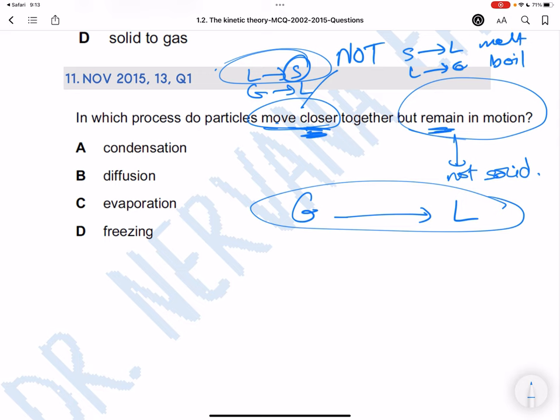Now, what's the process of gas to liquid? It is called condensation. And so the answer here is going to be A.